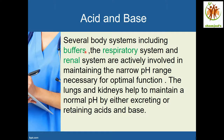Let's see how the body is maintaining neutrality. We have several body systems including buffers. The respiratory system and renal system are actively involved in maintaining the narrow pH range, which is very necessary for optimal function.